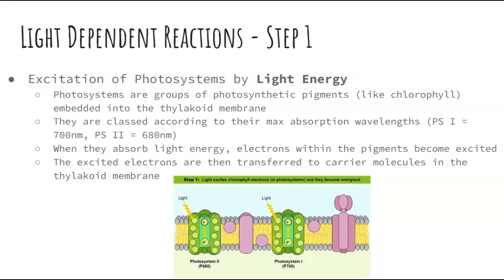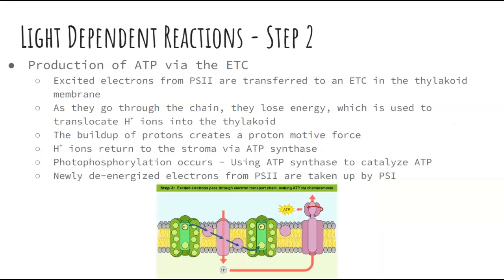When these photosystems absorb light energy, the electrons within those pigments become excited. When those electrons become excited, they're transferred to carrier molecules in the thylakoid membrane — very similar to what happens in cellular respiration, where excited electrons get picked up by carriers. Our next step is the production of ATP via the electron transport chain, which is coming back to haunt you.